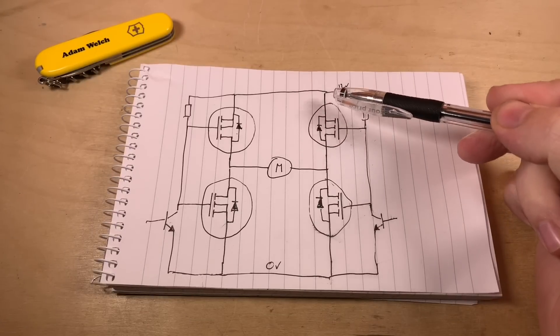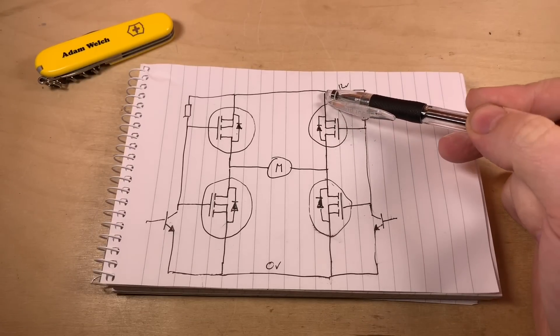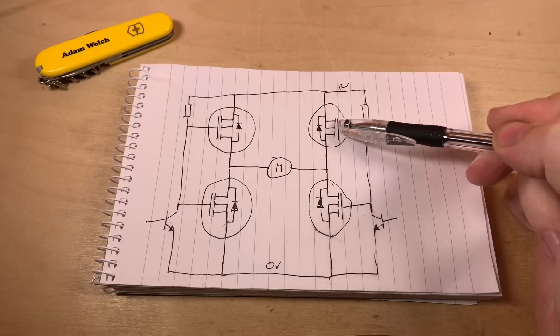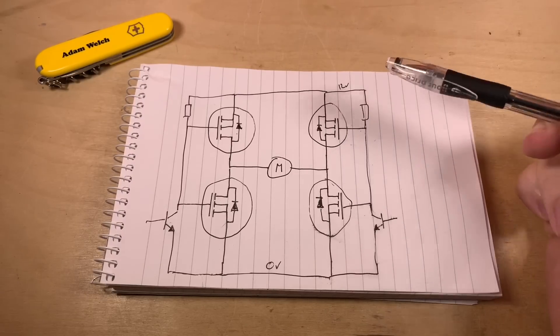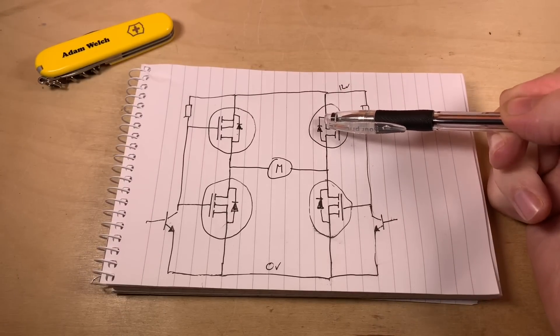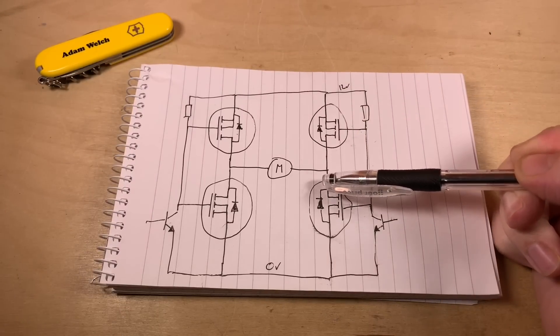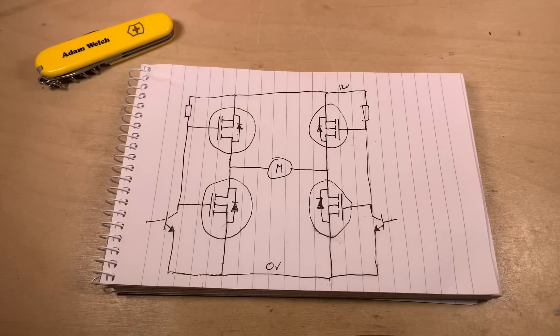But sadly at this same time the gate voltage is 3 volts lower than the source voltage here on this P-channel MOSFET and therefore it's already conducting which means we're conducting from 12 volts straight through the P-channel MOSFET through the N-channel MOSFET to 0 volts. We've created a short.